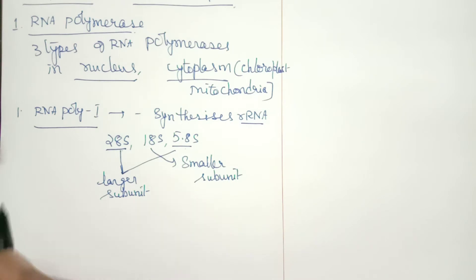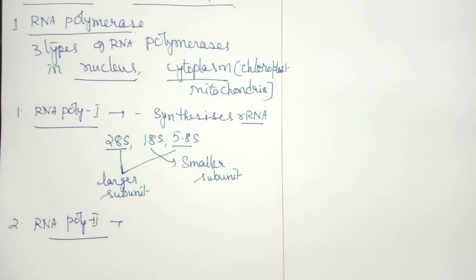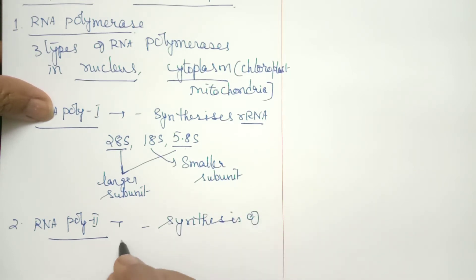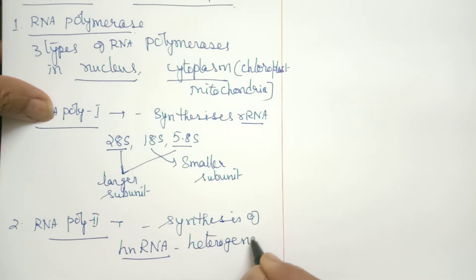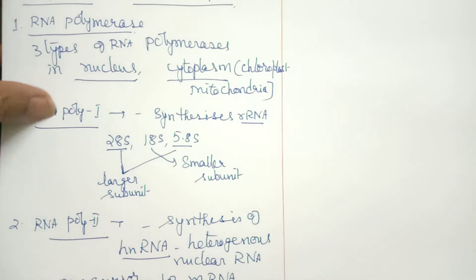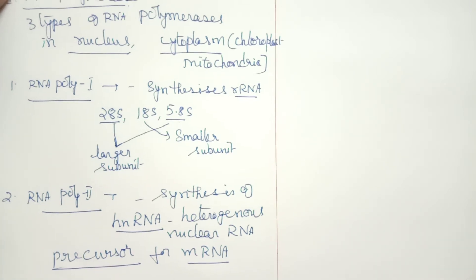The second type is RNA polymerase 2. It helps in the synthesis of hnRNA — heterogeneous nuclear RNA — which is a precursor for mRNA. It is a primitive form synthesized earlier that undergoes processing and maturation. So RNA polymerase 2 is involved in the synthesis of hnRNA.